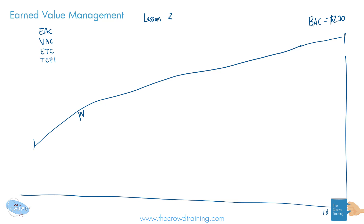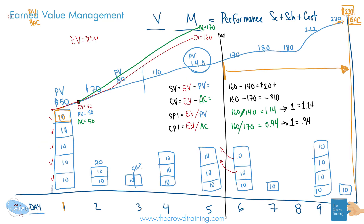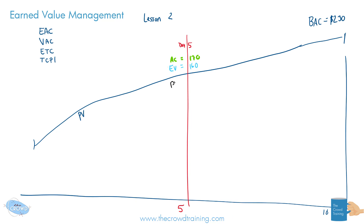Then we also looked at, if at any point in the project, let's say at the end of day five, what can we forecast or predict? Now, recalling some of the numbers we had in the first lesson, we had an actual cost equal to $170 at this point, an earned value of $160, and a planned value of $140. So that's what we're using from day five.